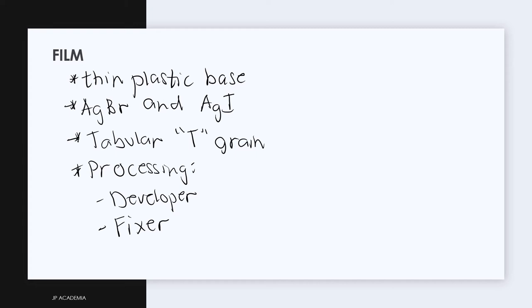A film consists of emulsion made out of silver halide that includes silver bromide and silver iodide crystals held in water-soluble gelatin.